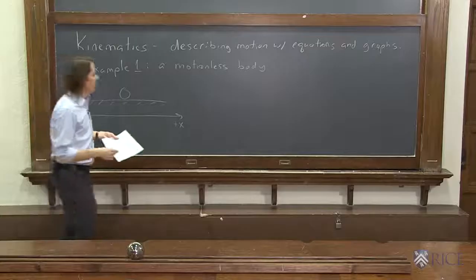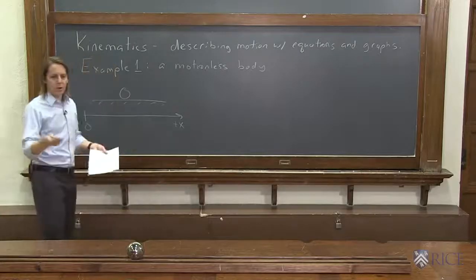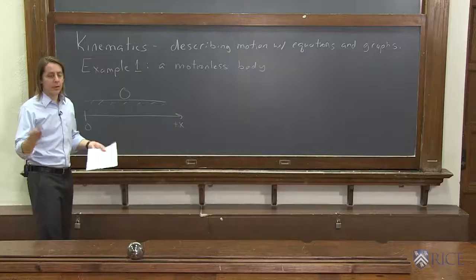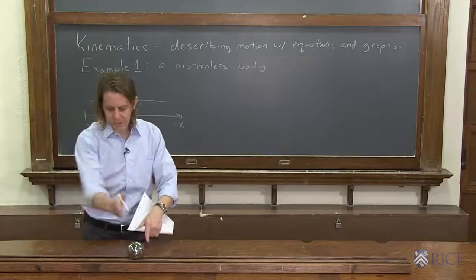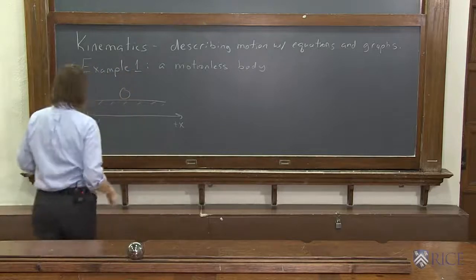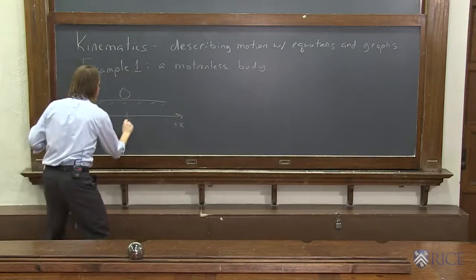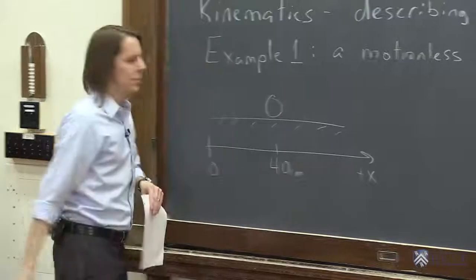So let's see. Where is HAL? Where are you, HAL? I have to look. I forgot. So I have my coordinate system over here. This is the origin. He's at about 40 centimeters. So if we wanted to mark it here, it would be at 40 centimeters on the x-axis.